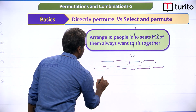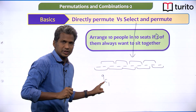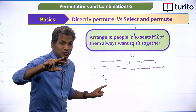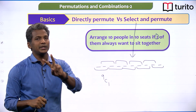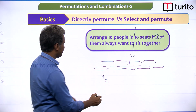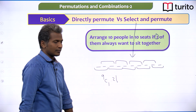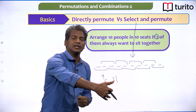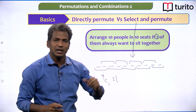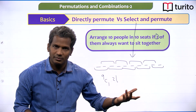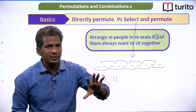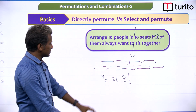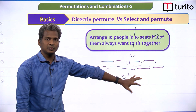Out of the 9 couple seats, select 1 in 9C1 ways and place the couple in that seat in 2 factorial ways (AB or BA). Now 8 people remain and 8 seats remain. Arrange 8 people in 8 seats in 8 factorial ways. So the answer is 9C1 × 2! × 8!.